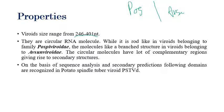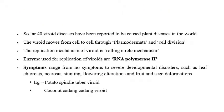So far, 40 viroid diseases have been reported in plants. Viroids move from cell to cell through plasmodesmata, similar to plant viruses. They can also move through cell division — when host cells divide, the viroid can spread along with the dividing cells.